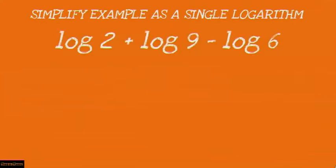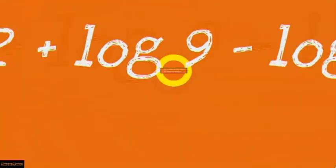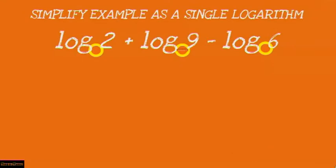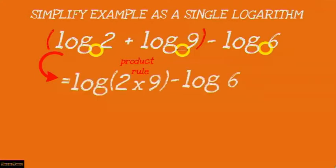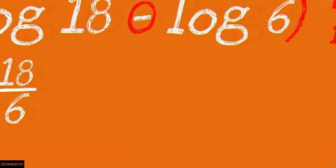Let's put this all together with an example: simplify log 2 plus log 9 minus log 6 into a single logarithm. The bases are all the same — if the base is not specified, the base is always 10. Following order of operations, we deal with the addition first by applying the product rule: log 2 plus log 9 becomes log (2 times 9), giving log 18 minus log 6. Applying the quotient rule gives log (18 over 6), and we end up with the answer log 3.